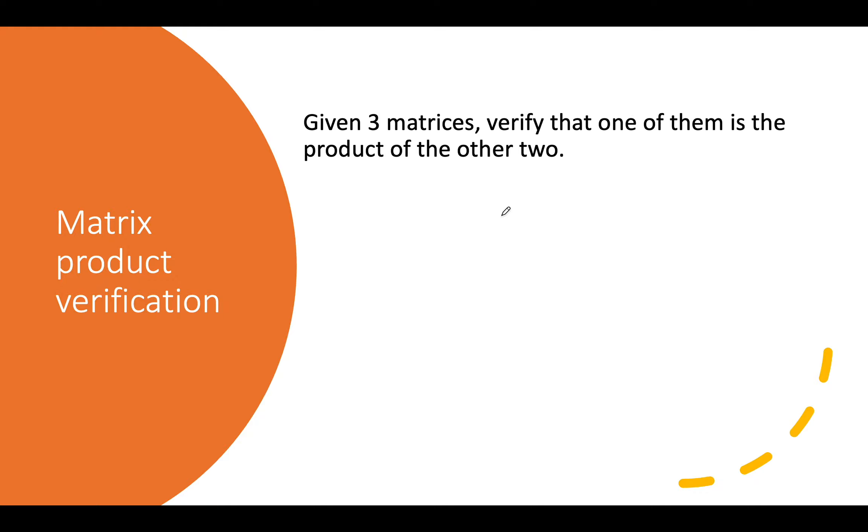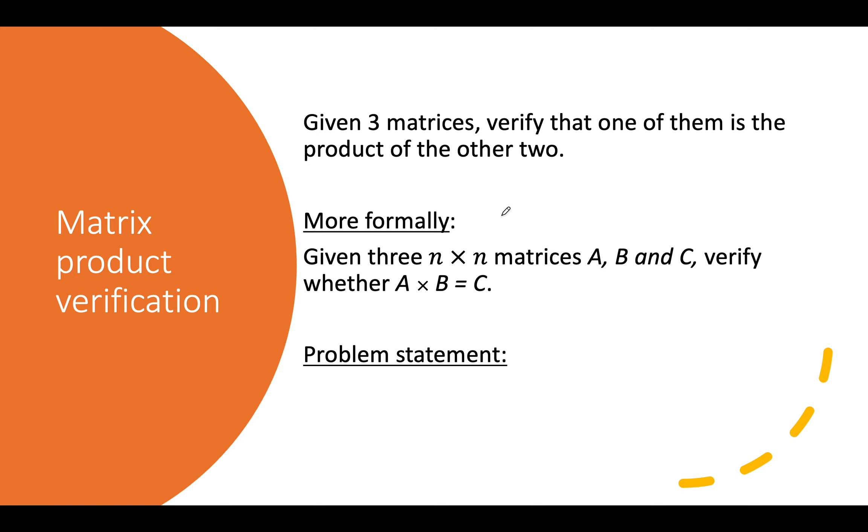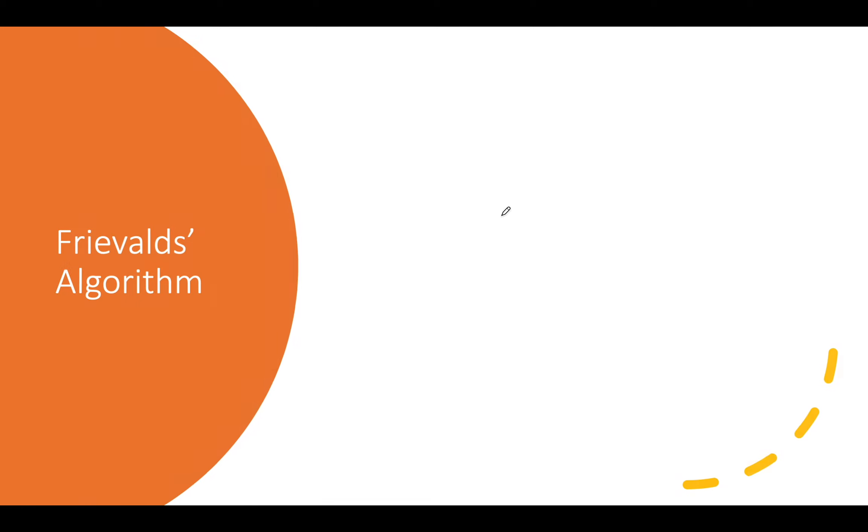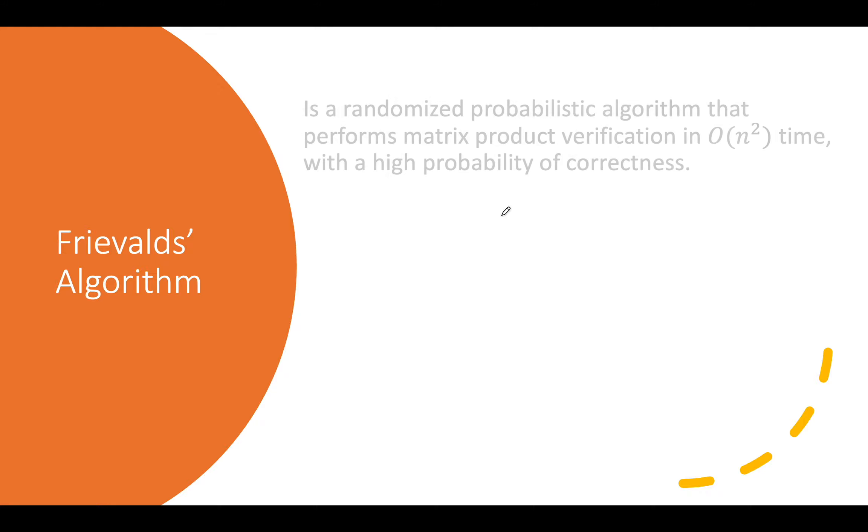We move on now to the topic of focus for this video, which is matrix product verification. Given three matrices, we want to verify that one of them is the product of the other two. Or more formally, given three n by n matrices A, B, and C, verify whether A times B is equal to C. And the problem statement we want to frame is, is there a faster way to perform the above verification faster than O of n cubed or O of n to the power 2.3729 which is the current fastest algorithm.